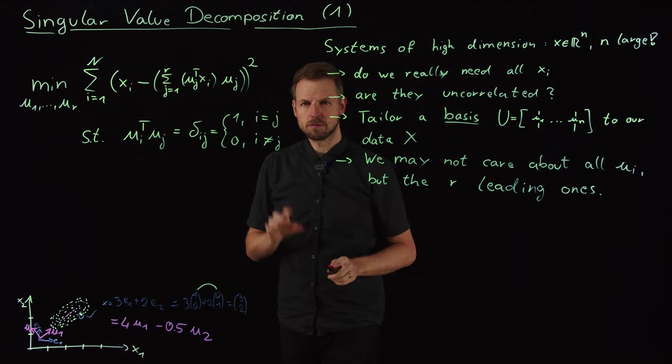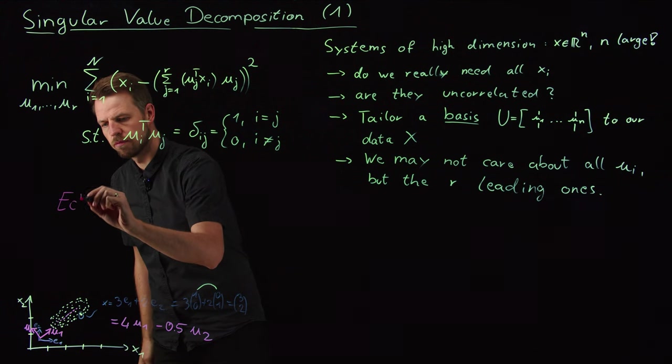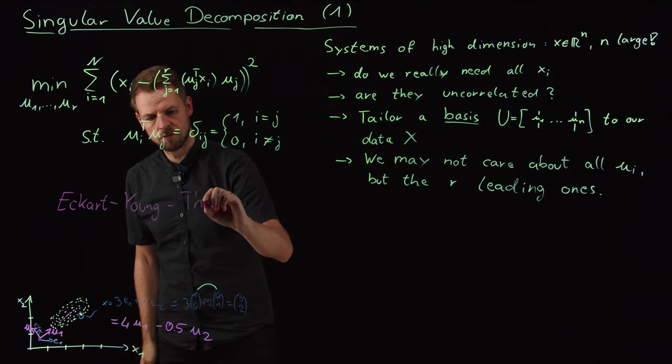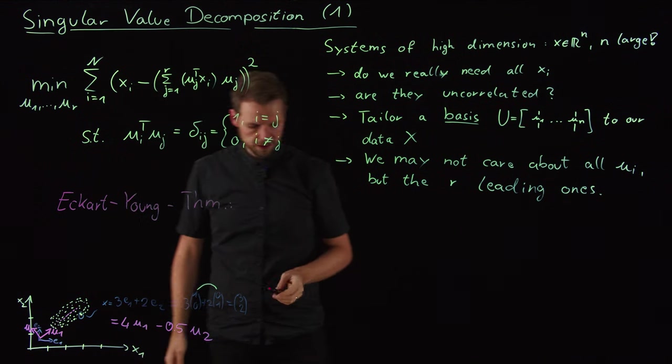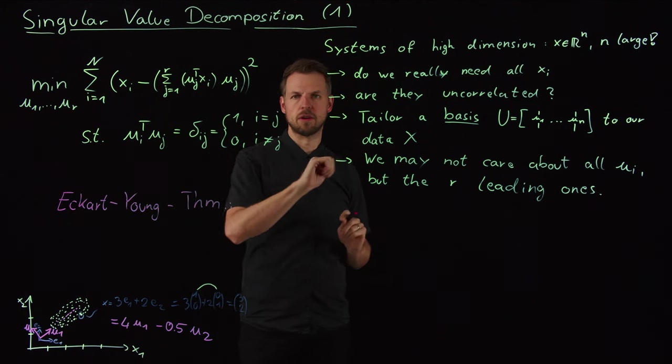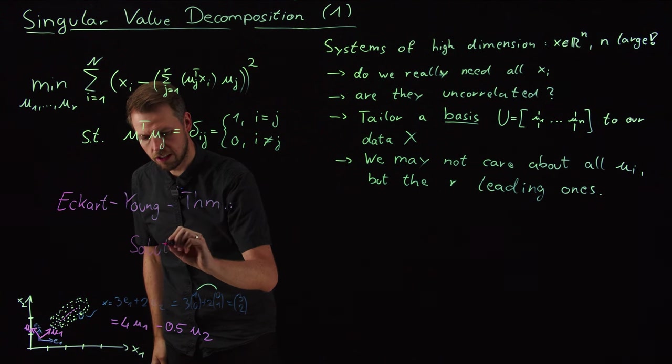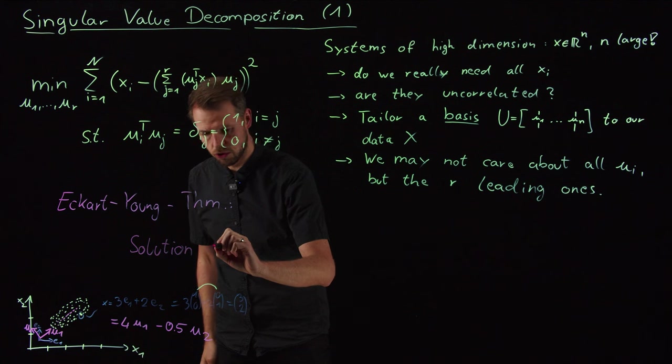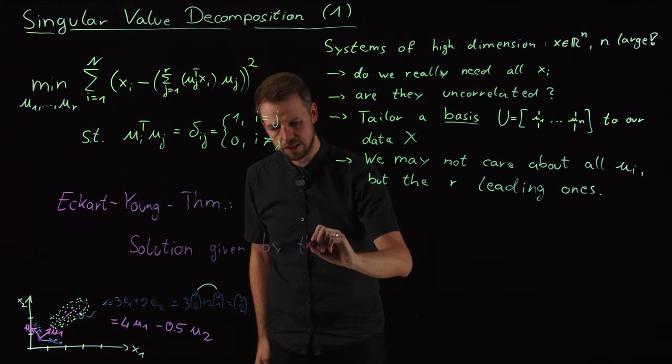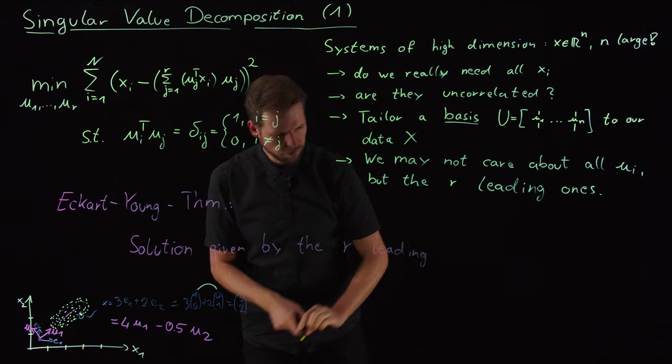And it looks challenging. But we are in luck. And this is something we are going to cover in the next video. There's this famous Eckhart-Young theorem that tells us the solution is given by the r leading singular vectors of our data matrix. So this is the relation to the singular value decomposition. So let's write this down and then we are going to discuss in the next video how to actually compute it. So the solution is given by the r leading singular vectors.